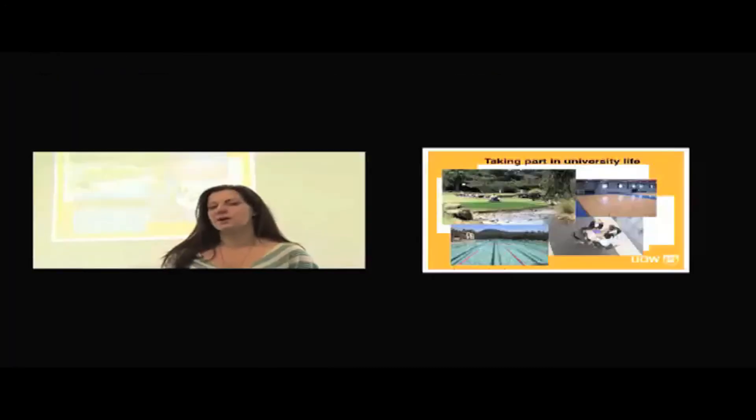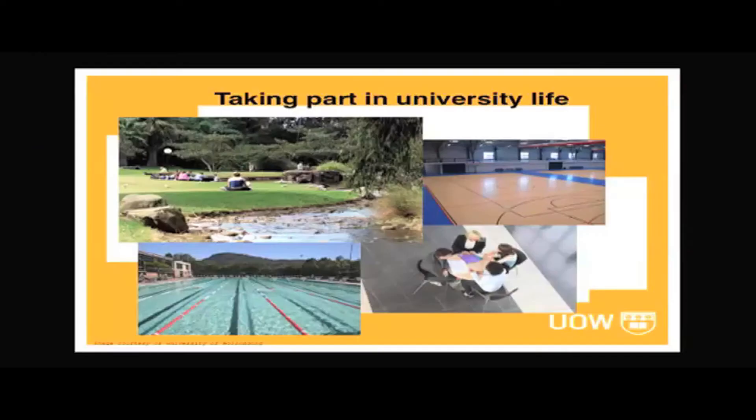The first thing about coming to a university is that universities are a much bigger place than most high schools. The University of Wollongong at the moment has around 29,000 students enrolled. So it's probably significantly bigger than your high school. Because of that, they have very large grounds. And as you can see in the slide, our grounds are really beautiful. It's such a lovely place to be.